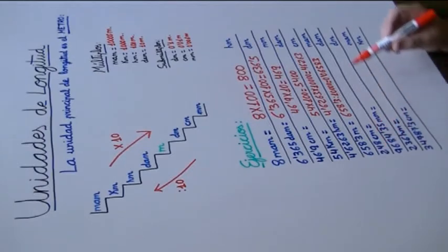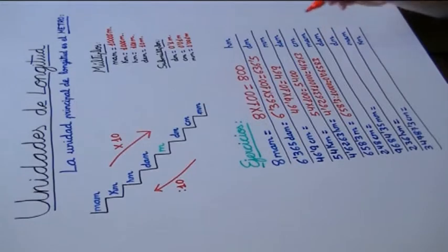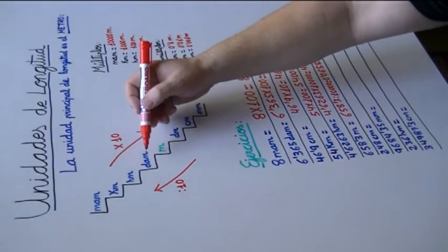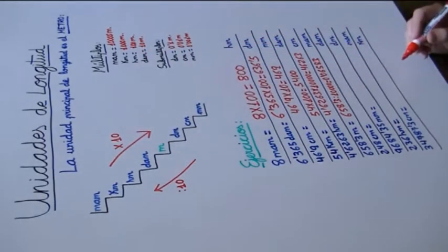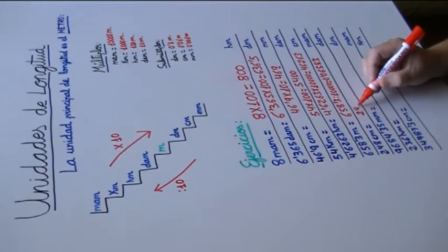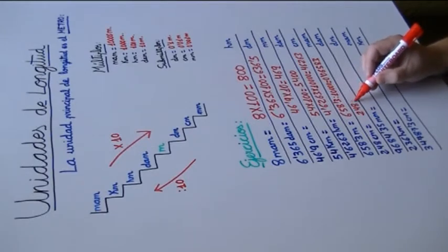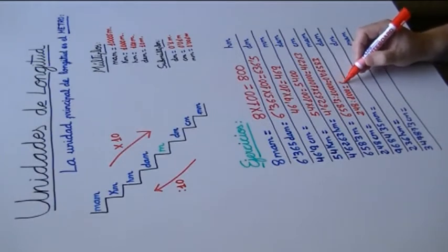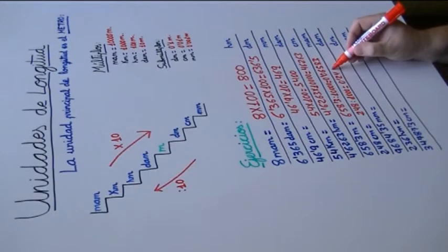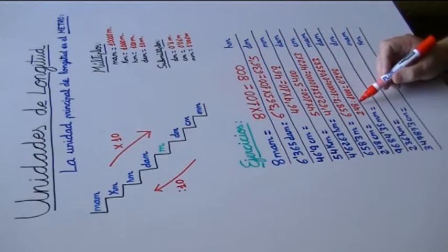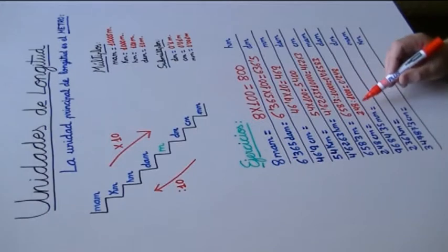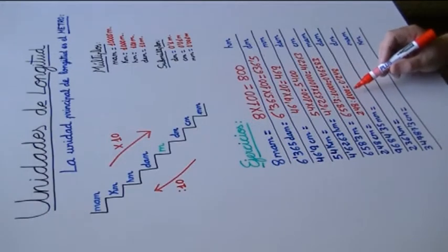248 centímetros a decámetros. De centímetros a decámetros, ¿cuántos escalones tenemos que subir? 1, 2 y 3. Pues dividimos entre 1.000. 248 entre 1.000 será igual a 0,248. Aunque no tenga coma, es como si estuviese a la derecha de la unidad. Desplazamos la coma hacia la izquierda: 0,248 decámetros.